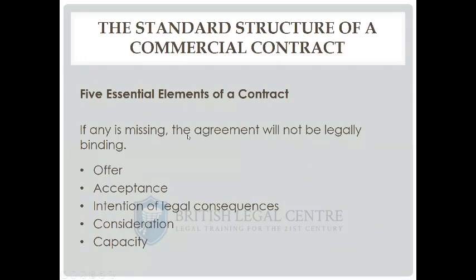These are the five essential requirements of a contract. If any one of these five elements is missing, it's not a legally binding contract - it may not even be a contract. First, there must be an offer - one party must make an offer, either to another party or to the world at large, like a newspaper advert. Second, the offer must be accepted - not a counteroffer as an attempt to renegotiate, but an acceptance of the offer as it was made. Next, you must intend to be bound by it - you must have the intention of legal consequences. These three things together make up what we call a meeting of minds.